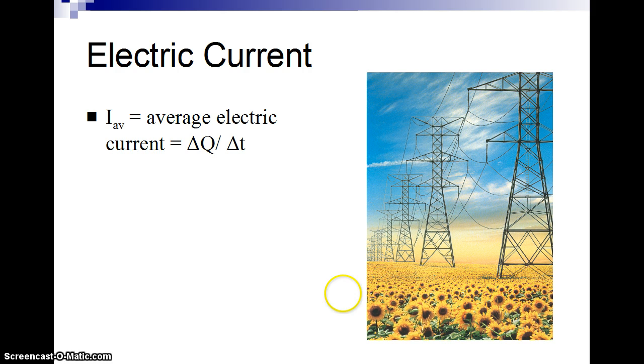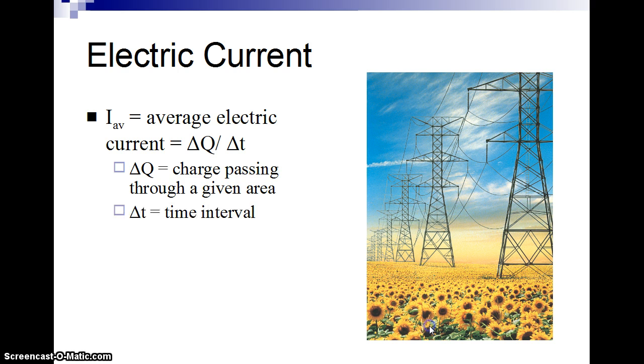So that is basically the average electric current is the amount of charge moving through in a specific amount of time, how many coulombs of charge per second. And basically, as we shrink that time interval to zero, it's just the instantaneous amount of current. So capital I by itself is just the instantaneous current, how much is flowing through right now.